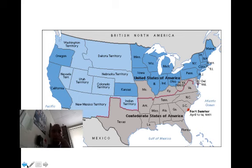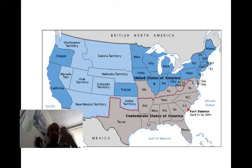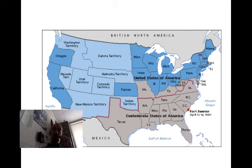With the Civil War map, there were certain border states that were not part of the South but still owned slaves. These border states were Maryland, Kentucky, West Virginia, and Delaware.